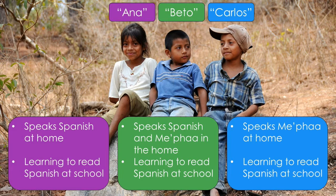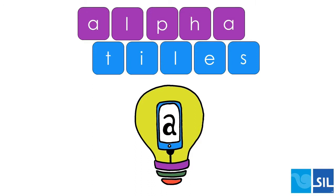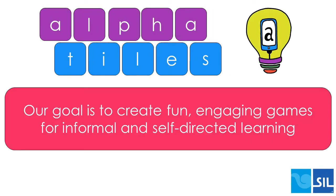What tools can we provide to kids like Carlos? With children in 7,000 other languages in similar situations, what can we do? In SIL Mexico, this summer we launched a pilot project called Alpha Tiles. We are hoping that this app will make some contribution toward the strengthening of literacy in minority language communities. We are excited about the possibility of creating the first literacy apps ever created for certain languages. Our goal is to create fun, engaging games for informal and self-directed learning. Let's take a look at the app, and then return to how we are designing Alpha Tiles to respond to these three big challenges.